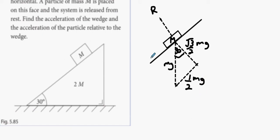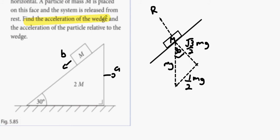We're going to give the particle acceleration B and the wedge acceleration A. As the particle goes diagonally left-down, it pushes the wedge to the right with acceleration A. Question 1 is to find the acceleration of the wedge — so it wants to know what A is. Then finally, find the acceleration of the particle relative to the wedge — it wants to know what B is.